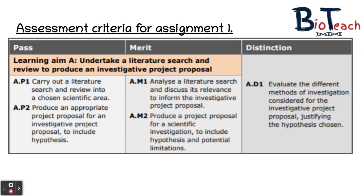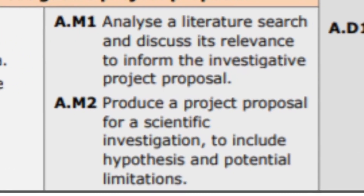Once you've conducted your literature review, use this information to form the basis of your project proposal. For example, if your literature review was on the burning foods experiment — which foods burn the longest to raise the temperature of water the most — you'd look at others who have done this investigation: how they did it, which foods they used, and whether they had any issues. Analysing your findings from the literature review touches upon the M1 merit criterion.